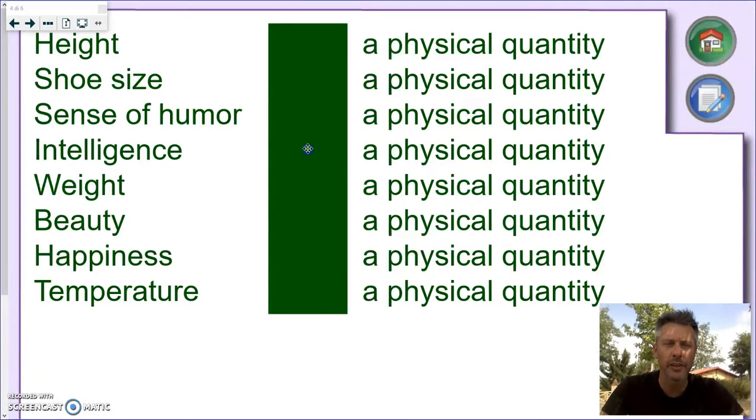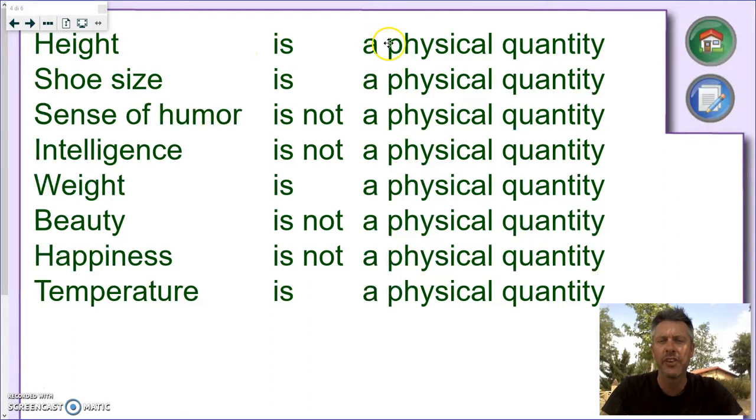Not surprisingly, height is something that we can measure. So this is a physical quantity. We measure the shoe size. We know how big the shoes you're wearing. So that is a physical quantity. Sense of humor, on the other hand, is something which we cannot measure. People might disagree on whether someone has or has not a sense of humor. And this is also because you cannot measure. Now intelligence, and I know here we can spark a little debate, whether intelligence is something we can or we cannot measure. And many of you might think about the IQ test.